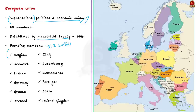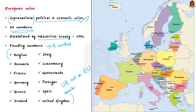The 12 founding members are Belgium, Denmark, France, Germany, Greece, Ireland, Italy, Luxembourg, Netherlands, Portugal, Spain, and the United Kingdom. Since 1993, there have been many periodic additions of new nations into the European Union, and now the number of countries in the EU has touched 27. You should remember that the United Kingdom, a founding member of the European Union, left the EU on 31st January 2020 — the only country to have left the EU. This is what we call Brexit. Croatia has been a member of the EU since 2013.